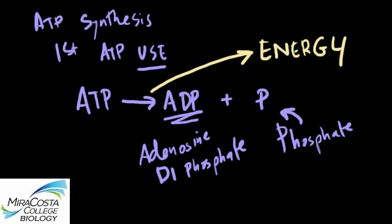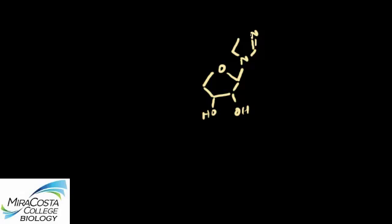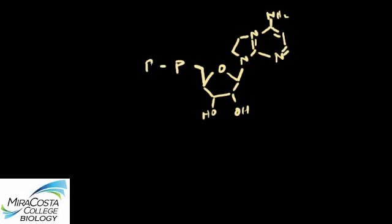So what happens is that the enzymes, motor proteins, transport proteins, and such that require ATP energy in order to complete the cellular work are using this little blast of energy by attaching the ATP and cleaving off a phosphate.